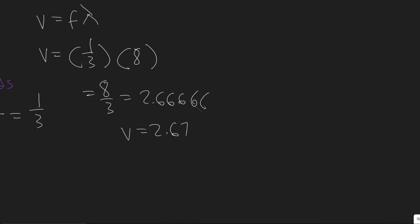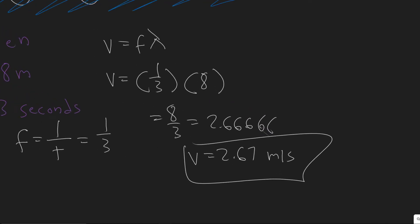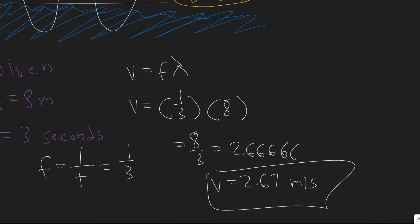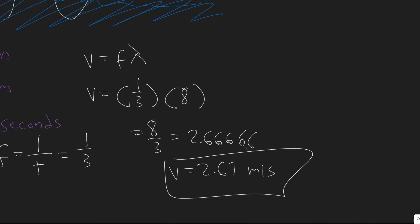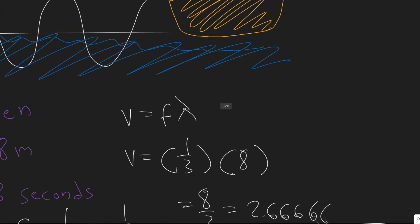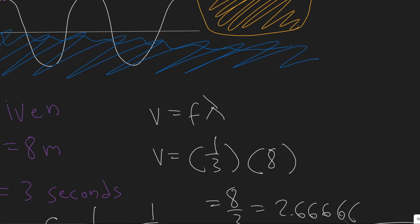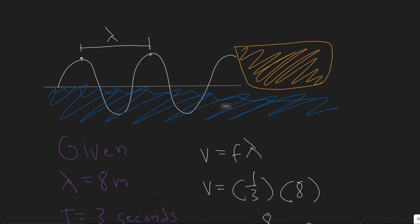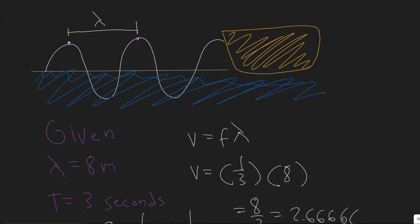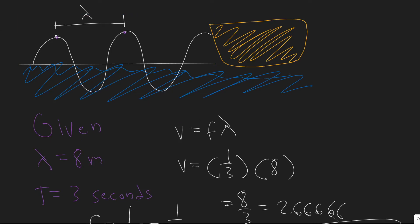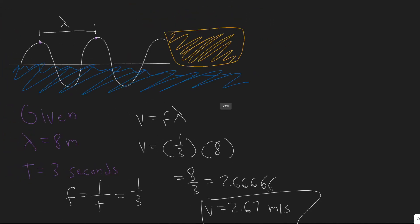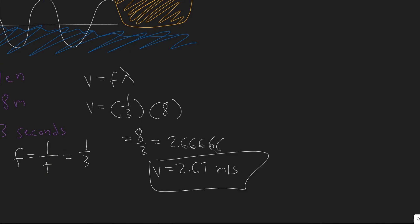The velocity of this wave is 2.67 meters per second. Quick recap: the key formula for this chapter is velocity equals frequency times wavelength. Wavelength is the distance between the crests, and the period is how long it takes to complete one cycle. So 2.67 meters per second is your answer. Hopefully you found this video useful.